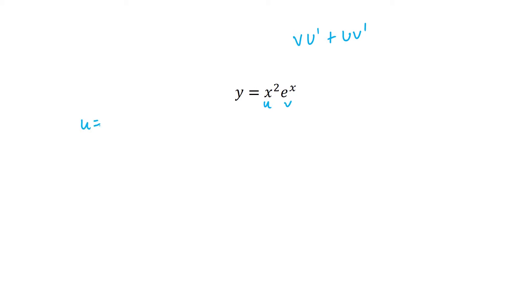So u is just going to equal x squared. u dash is the derivative of x squared which is 2x. v is going to equal e to the power of x and v dash the derivative of e to the power of x.